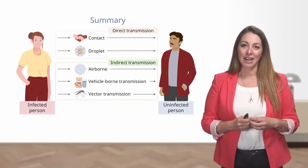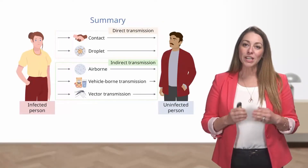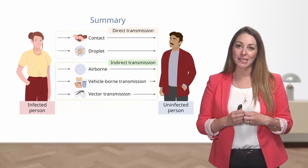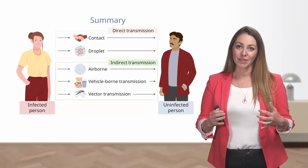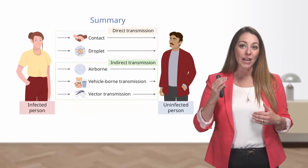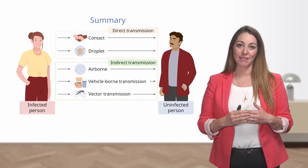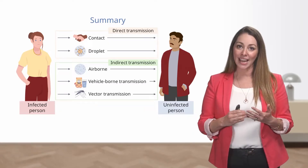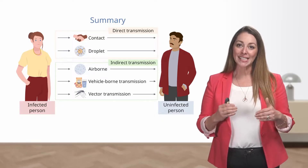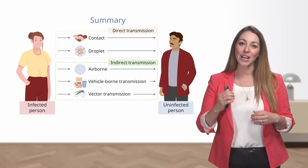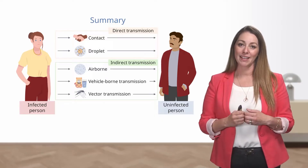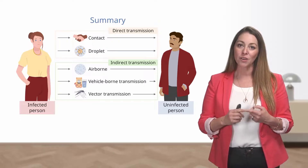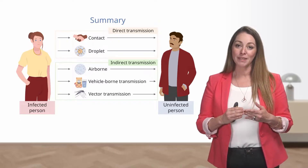In summary, modes of transmission are ways that communicable diseases are spread. We have direct transmission, which includes direct contact and droplet spread. We also have indirect transmission, which includes airborne spread, vehicle-borne transmission, and vector transmission.